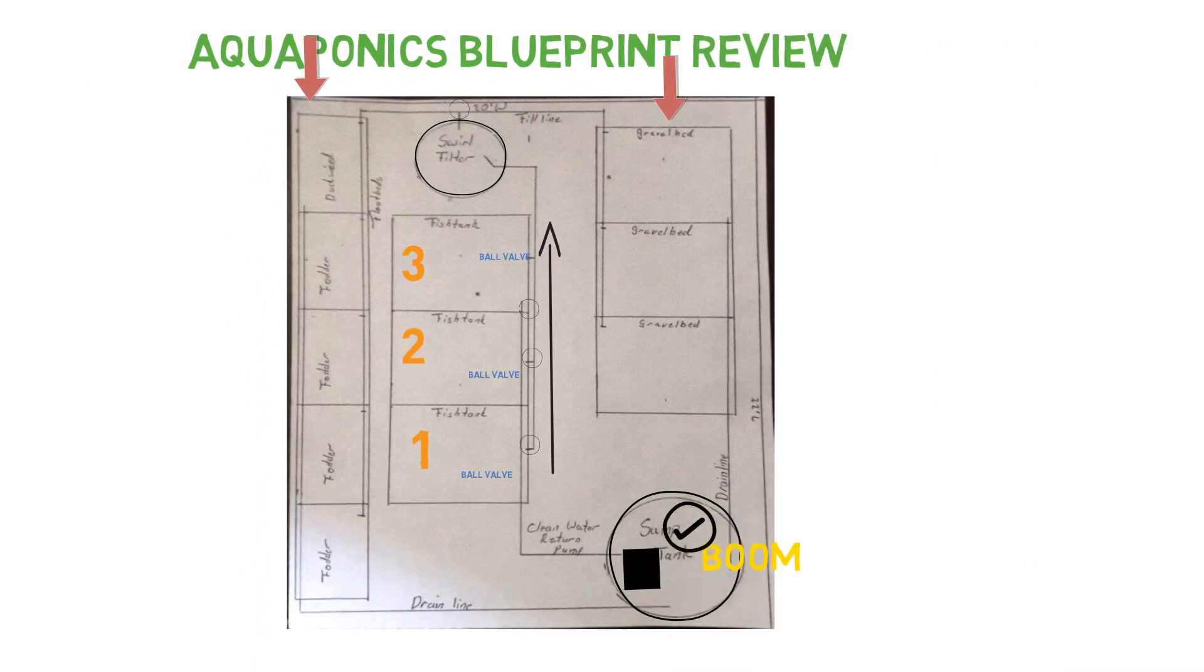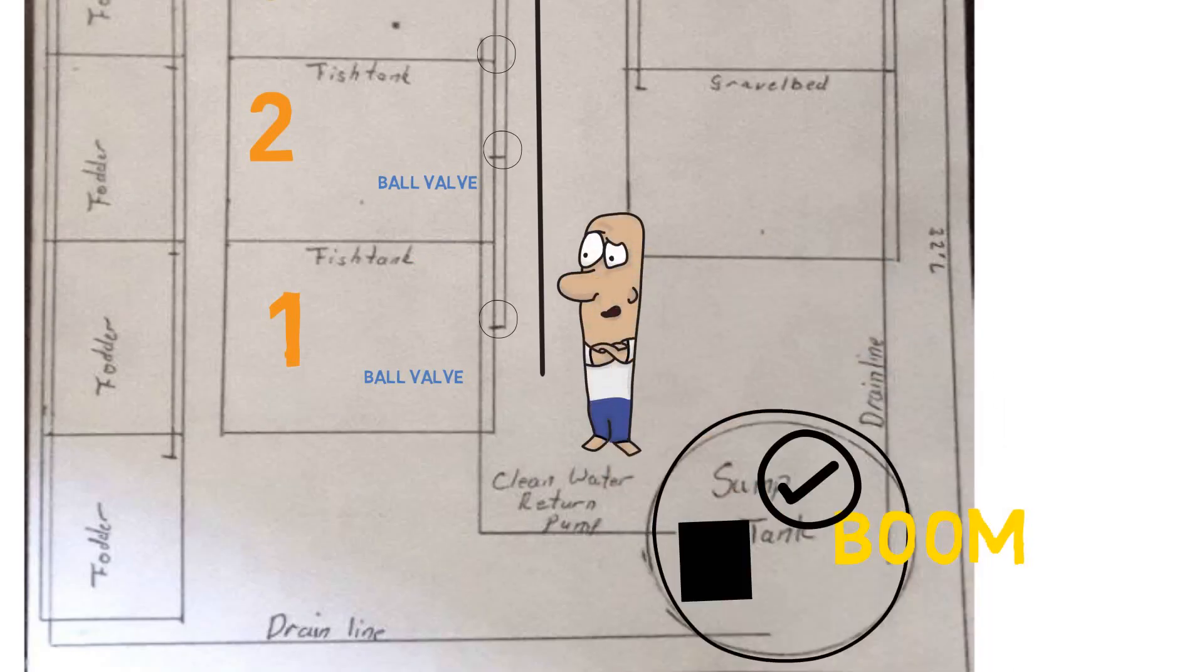We got a pump in there that's going to come up. And what you have right here, it says clean water and return pump. I think that this might be an error because there's nothing clean coming from the fish tank back to the sump tank. So I think that might be some error that went on there because anything coming back from the fish tank is going to be dirty. It's going to have solids all in it. So I think that's an error there.